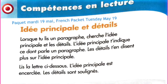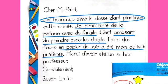L'idée principale est encerclée, entourée. Les détails sont soulignés. Alors, ici, l'idée principale c'est qu'elle a beaucoup aimé la classe d'art plastique. C'est ça qui est entouré. Les détails qui soutiennent l'idée principale sont ces trois phrases qui sont soulignées : elle a aimé faire de la poterie avec de l'argile, c'est amusant de peindre avec les doigts, et faire des fleurs en papier de soie a été son activité préférée.